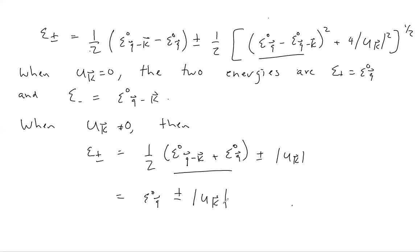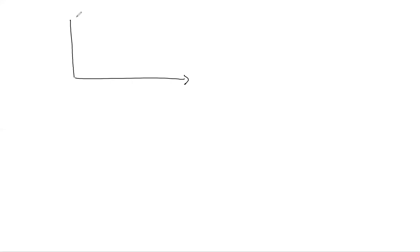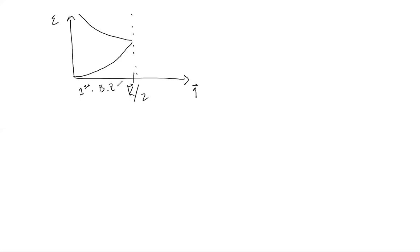The picture to have in your mind is: if we draw the cartoon of the energy levels as a function of q, when we approach some value of K over 2, which is the edge of a Brillouin zone — restricting all wave vectors to lie in the first Brillouin zone — as the wave vector approaches the zone edge, this is where the degeneracy occurs. If there is a non-zero coupling to the lattice, this degeneracy is lifted and a gap of size twice |u(K)| opens. So in the Bragg plane, the degeneracy is likely to occur and it will be lifted by coupling to the lattice.